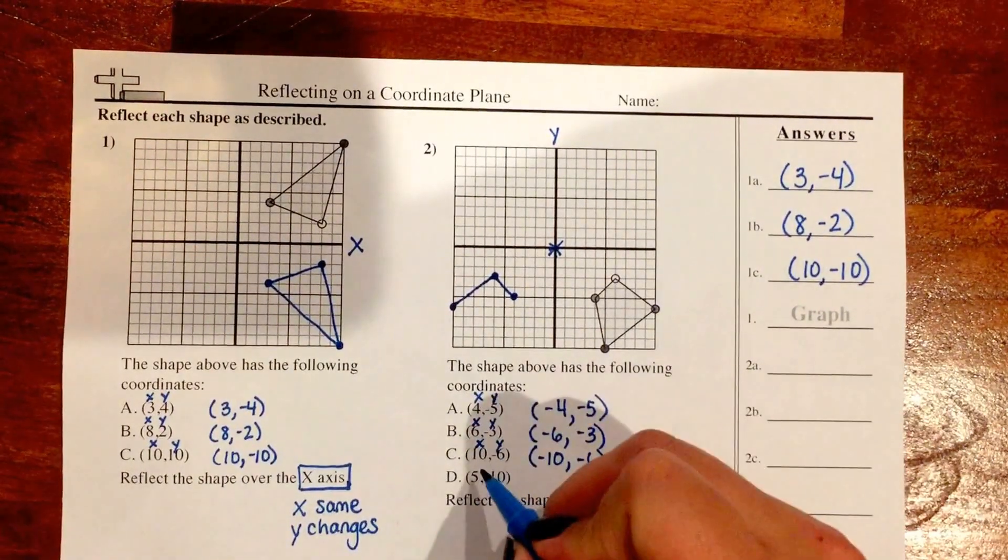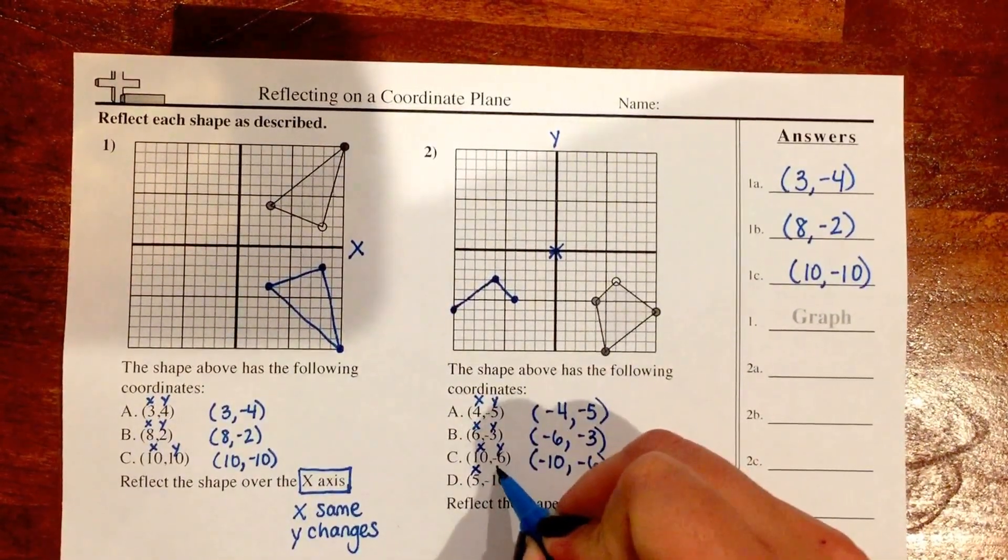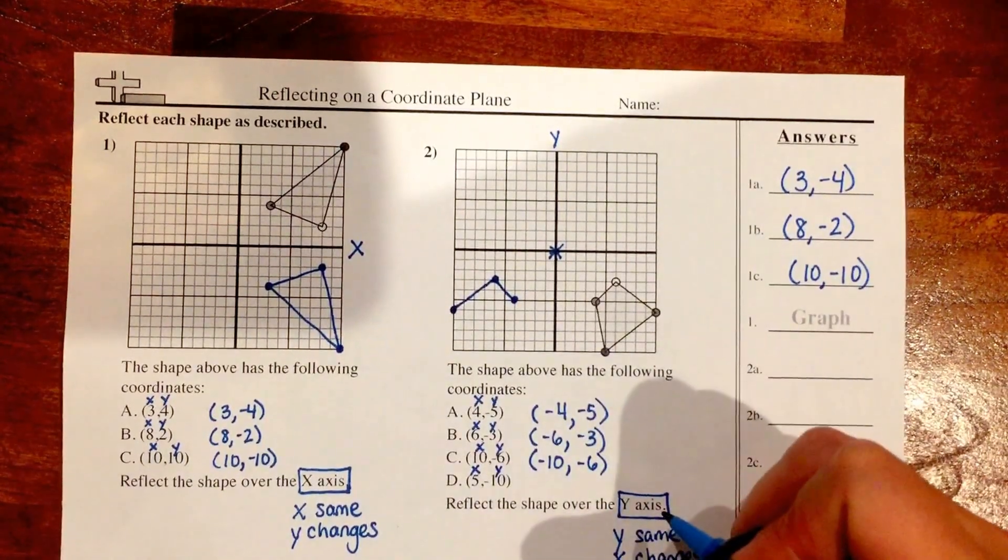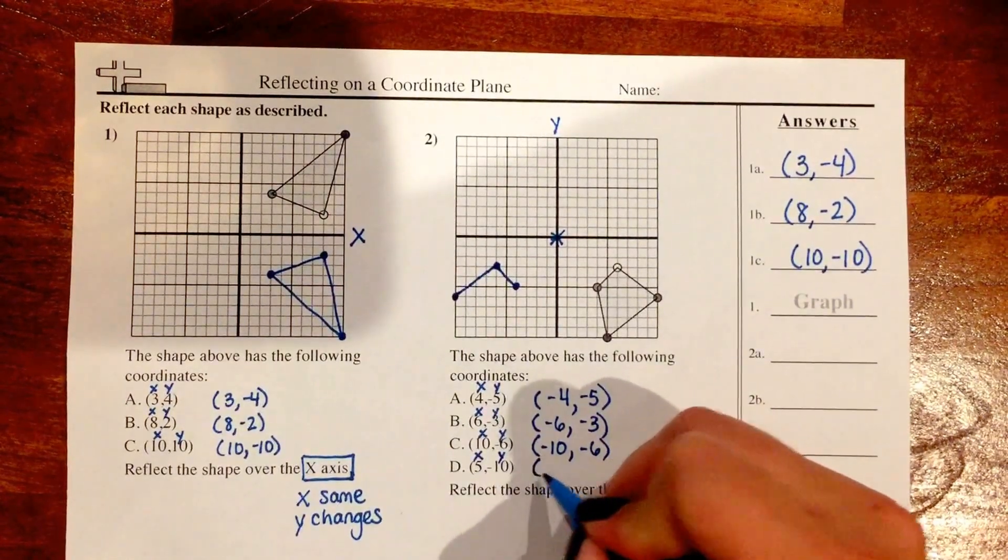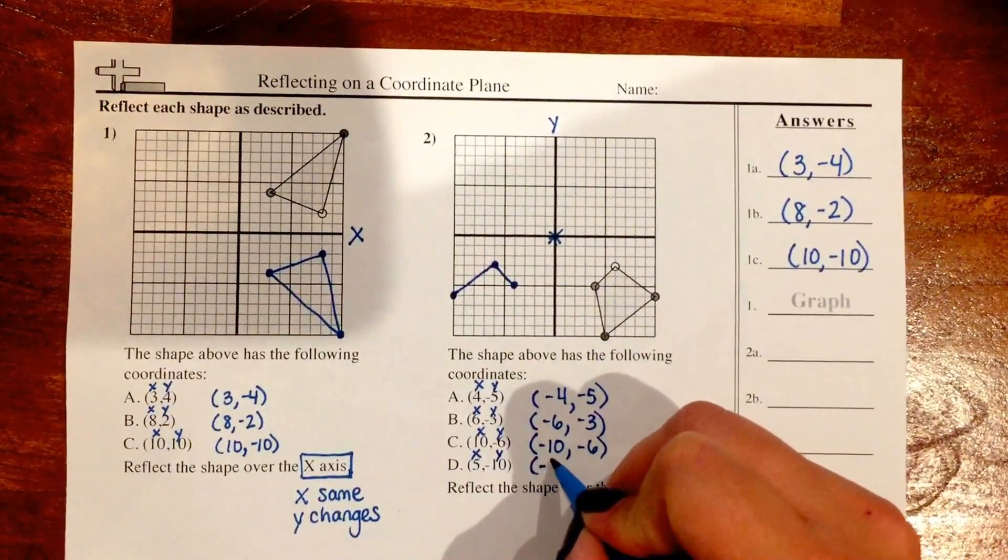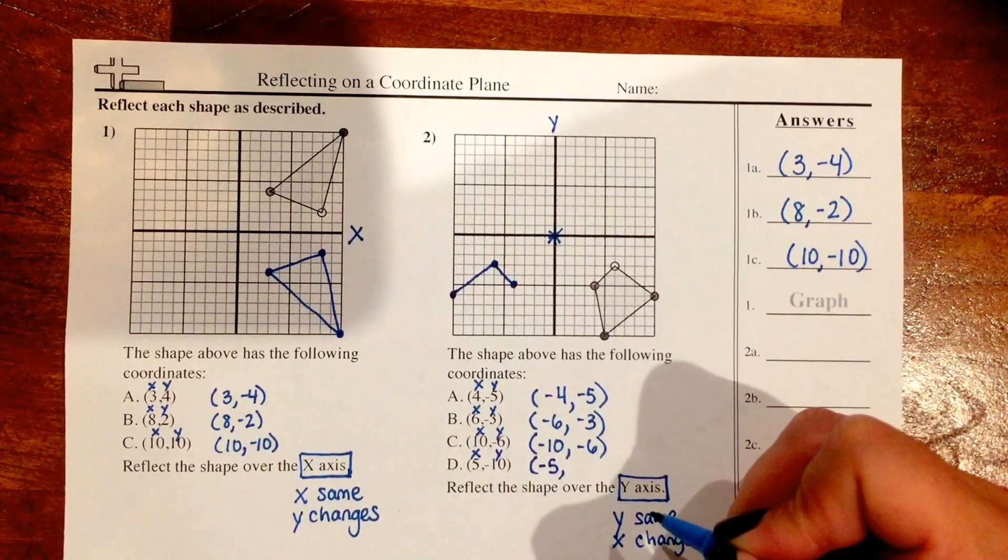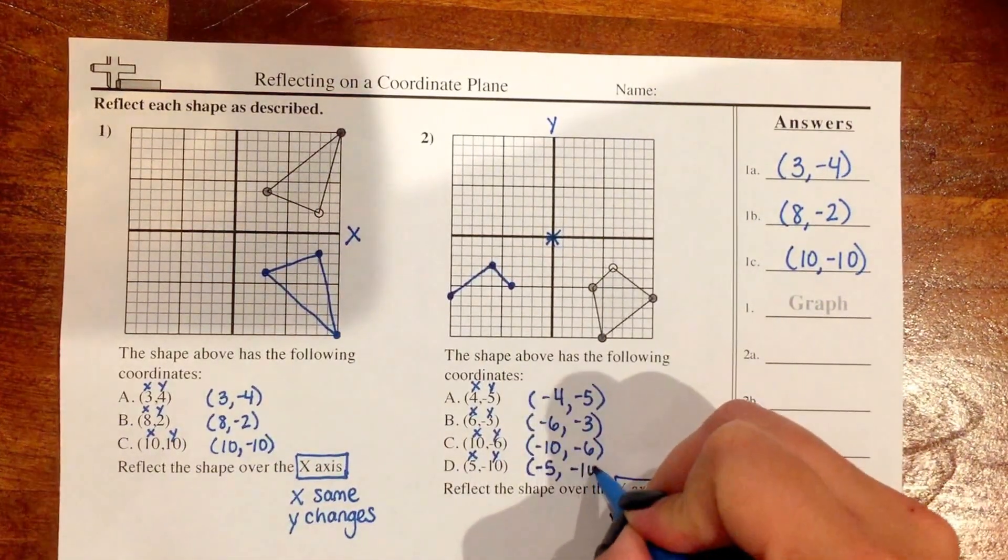And last, my point D. I have 5 as my x-coordinate and -10 as my y. So because again as I'm going over my y-axis, my x is going to change from positive 5 to negative 5, and my y stays the same which is -10.